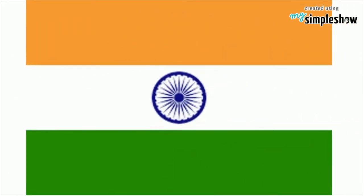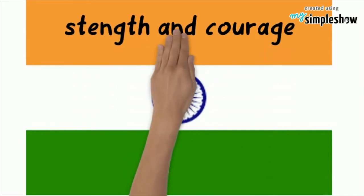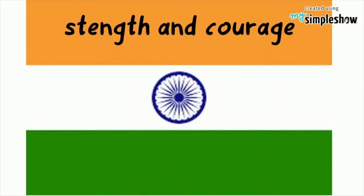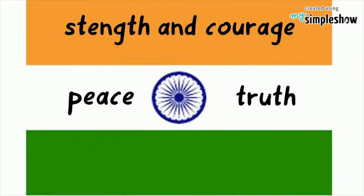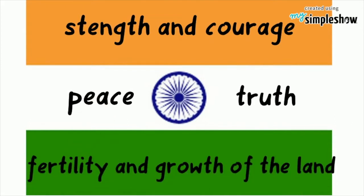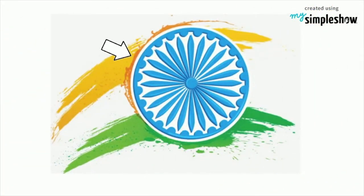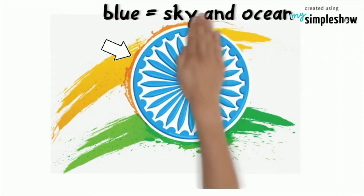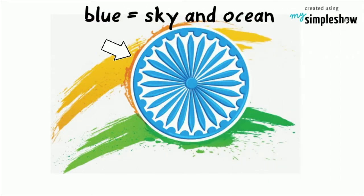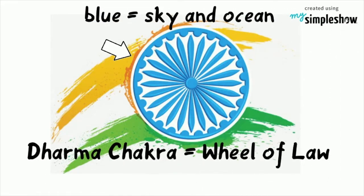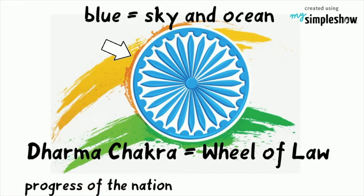This is India's flag. The saffron color indicates the strength and courage of the country. The white indicates peace and truth. The green shows the fertility and growth of the land. In the center of the white band is a blue wheel — the Dharma Chakra, or wheel of law — which symbolizes the sky and ocean, and represents the progress of the nation and justice in life.